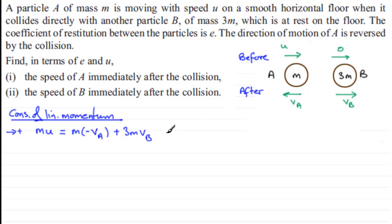And what I can do now is, we'll just divide through by m. It's in every term. So, we can take that out. And cleaning this up, it just gives us, therefore, u equals minus VA and then plus 3VB. OK. So, that's one equation. Let's number it one.